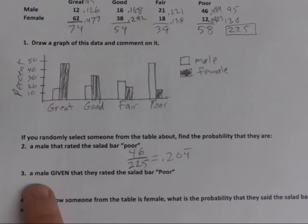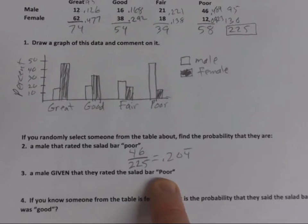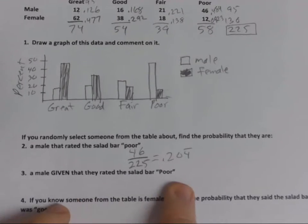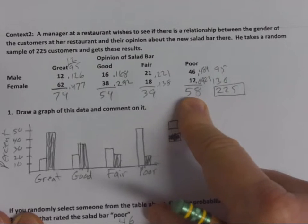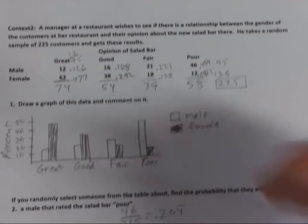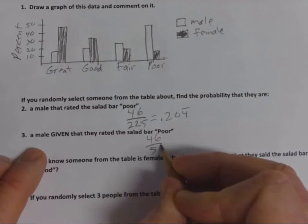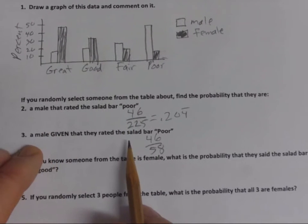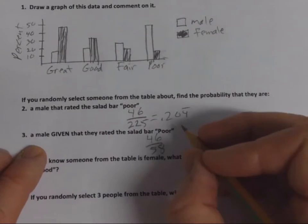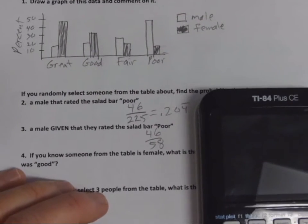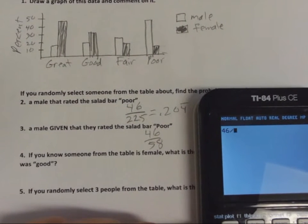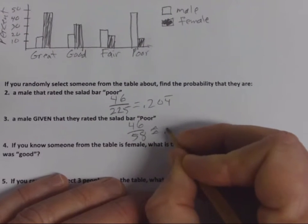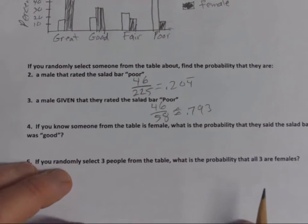What's the probability of randomly selecting someone who is male, given they rated poor? 'Given' means you only look at that group — in this case, the poor column. There are 46 males out of 58 who said poor. So the probability is 46/58, which is approximately 0.793. There's a difference between 'male and poor' versus 'male given poor' — given poor, you look just at what you're given.